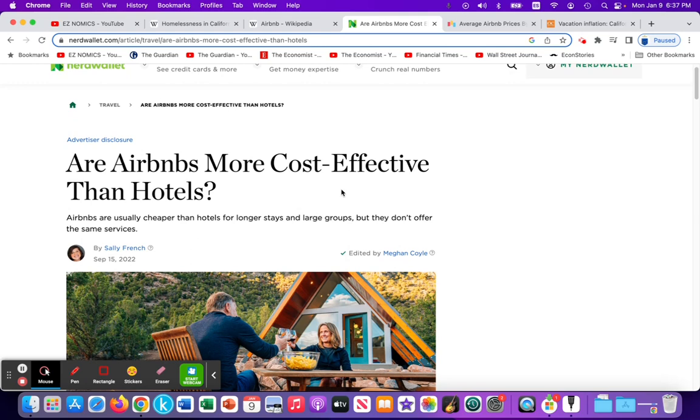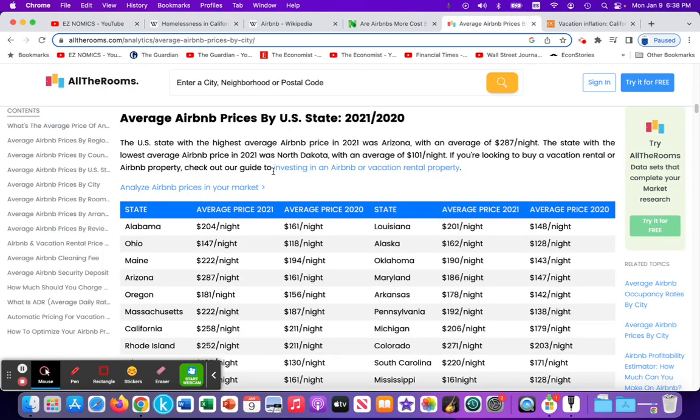In this article here, it looks at hotels versus Airbnbs, and it notes that generally speaking, Airbnbs are cheaper than hotels. So Airbnbs are a cheaper alternative, a cheaper substitute to hotels. Let's look at the state of California. On this website, it highlights that in California, the average price for an Airbnb in 2021 was about $258 a night. In 2020 was $211 a night.